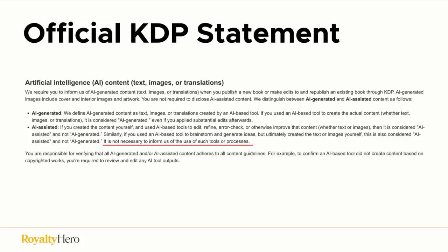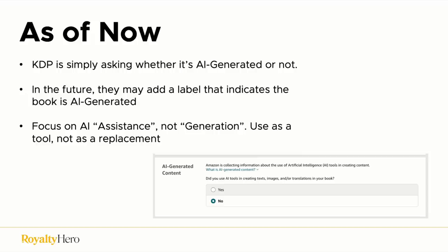So is KDP okay with AI content? Recently, KDP officially came out with a statement regarding AI content. They classify AI content in two ways. First, AI generated — when you generate the actual book content with AI and then modify it; even with substantial modification it is still considered AI generated. AI assisted, on the other hand, is when you write the book yourself and then use AI to edit it later. For AI assisted use, it is not necessary to inform KDP.